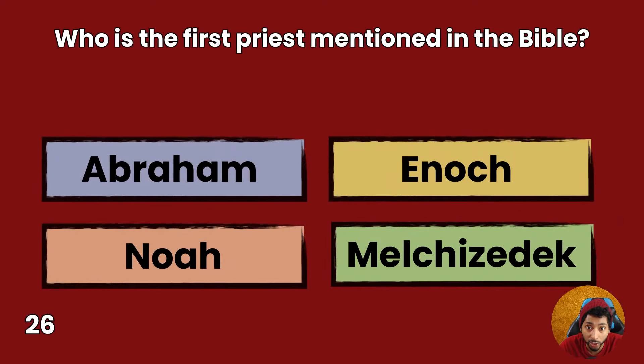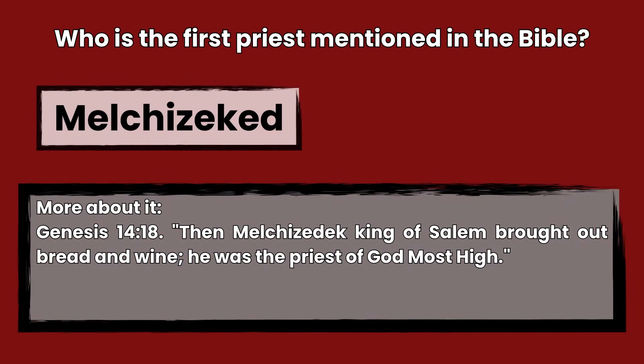Question 26: Who was the first priest mentioned in the Bible? Abraham, Enoch, Noah, or Melchizedek? Answer: Melchizedek. Genesis 14:18 — Then Melchizedek, king of Salem, brought out bread and wine. He was the priest of God Most High.